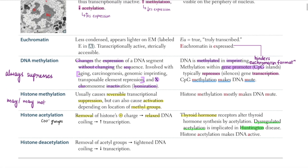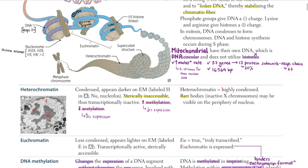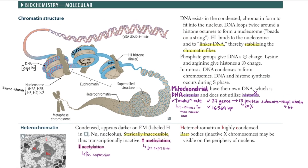Deacetylation decreases transcription because the acetyl groups are removed, causing more tightening of the DNA as there is more positive charge in the histones. Everything on this page is correlated and interlinked — you just need to decode it. This is the first page of USMLE Step 1. Like, share, and subscribe because I'll be posting more such videos as I revise this book.